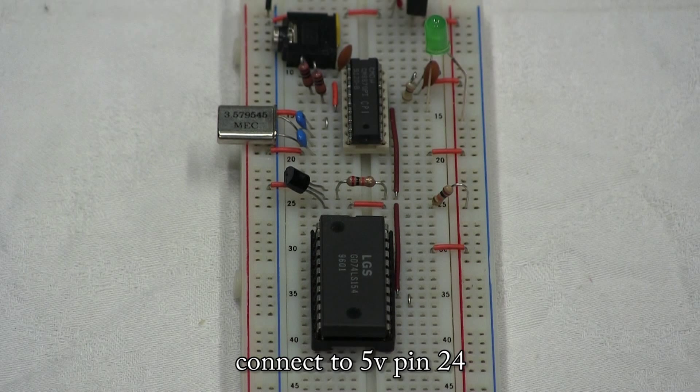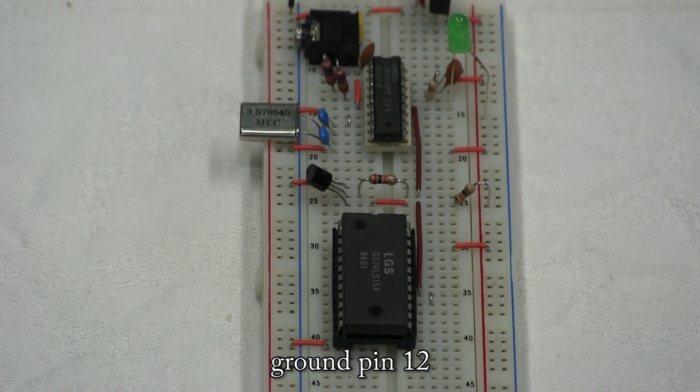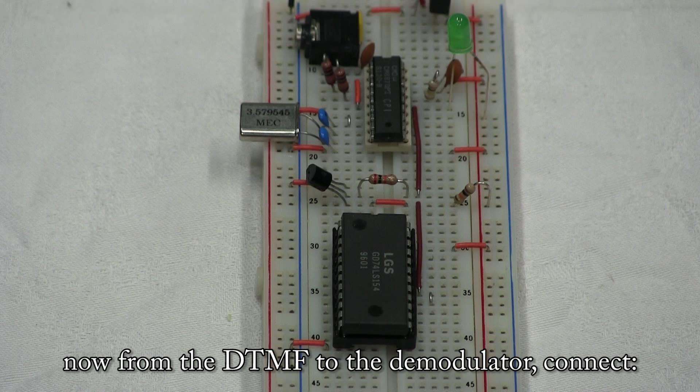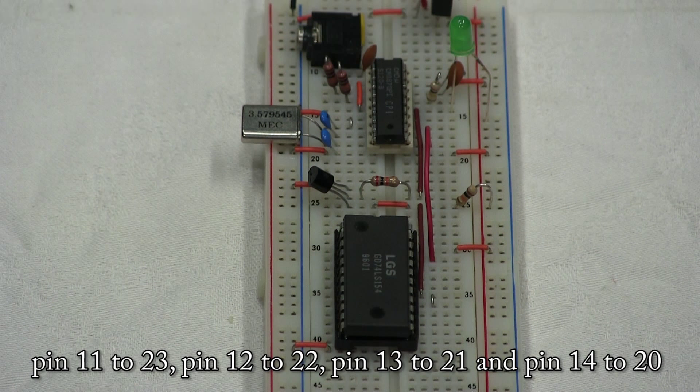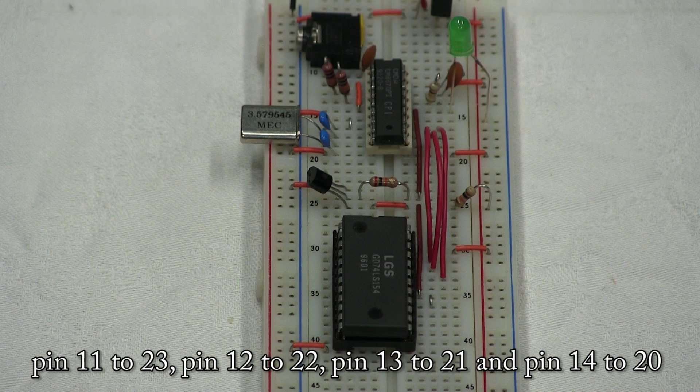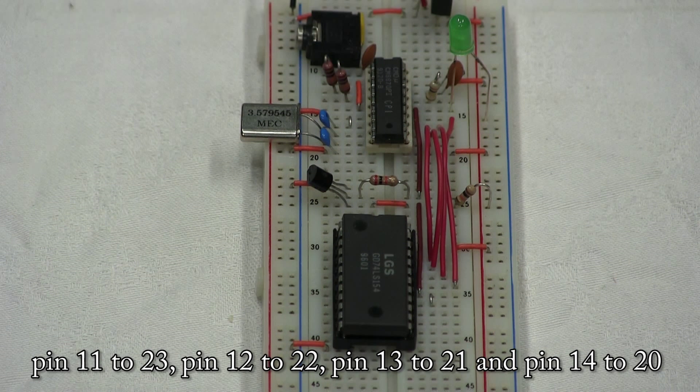Connect to 5V pin 24. Ground pin 12. Now from the DTMF to the demultiplexer, connect pin 11 to 23, pin 12 to 22, pin 13 to 21, and pin 14 to 20.